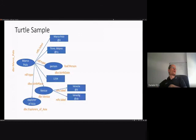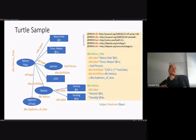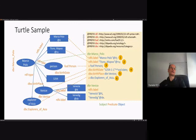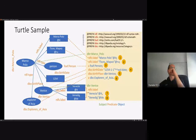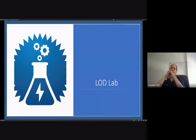A complete Turtle sample represents the full graph we have been building. We have a subject, predicate, and object representing Marco Polo: two labels, that he is a Person, his birth date, his birthplace, that he is an explorer of Asia, and details about Venice with a couple of labels. That concludes the theoretical introduction. In the next section — the laboratory — we will see more practical examples, and if you have any questions you are free to ask them or discuss more in the lab session.